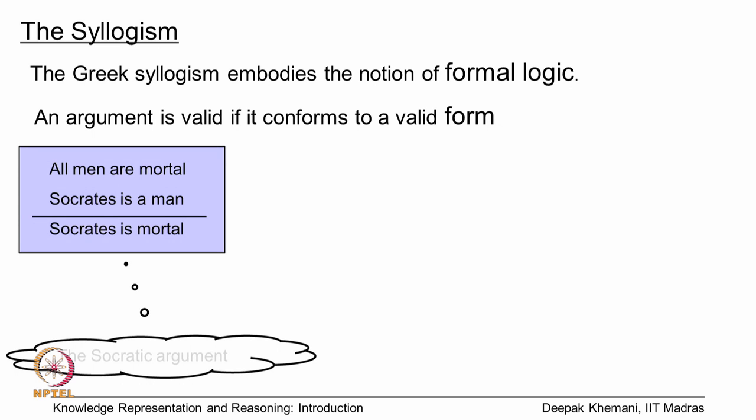Some of you might be familiar with this argument known as the Socratic argument, in which you say that if all men are mortal and Socrates is a man, then Socrates is mortal. The key thing here is that it is the validity of the argument that we are concerned with, not the truth value of the premises. We say that as long as the premises are true, we will accept the conclusion.